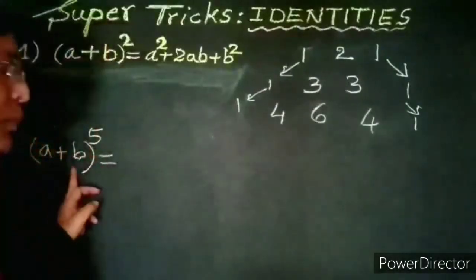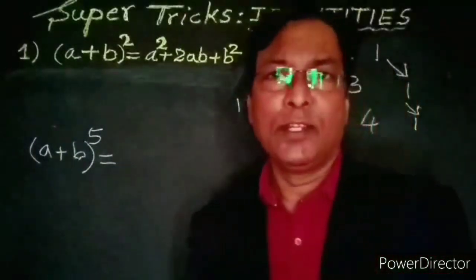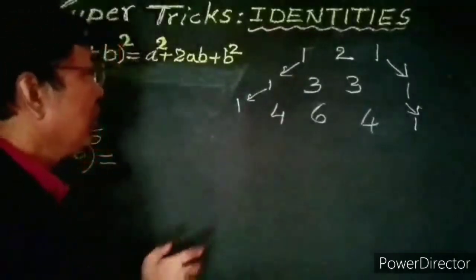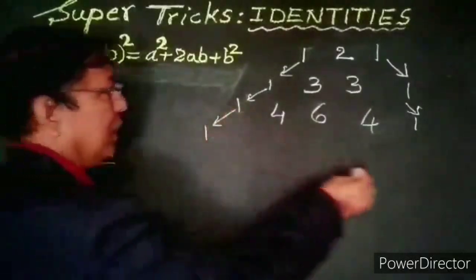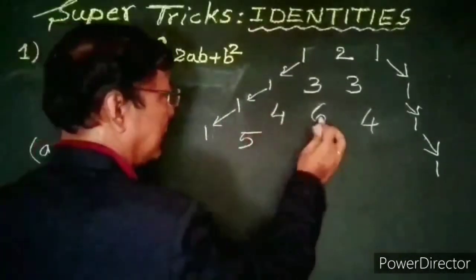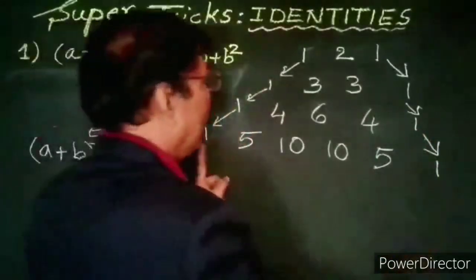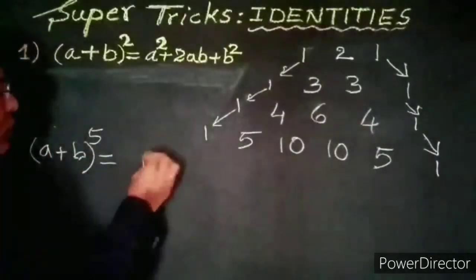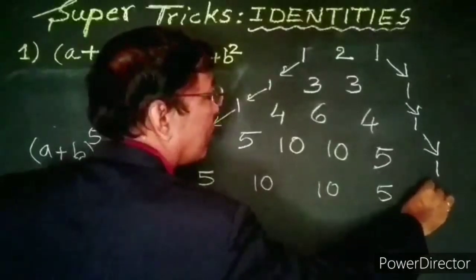Now we are going to see the identity (a+b)⁵. We know the coefficients for (a+b)⁴ are 1, 4, 6, 4, 1. Write 1 on each end, then add adjacent pairs: 1+4=5, 4+6=10, 6+4=10, 4+1=5. So the six coefficients for (a+b)⁵ are 1, 5, 10, 10, 5, 1.